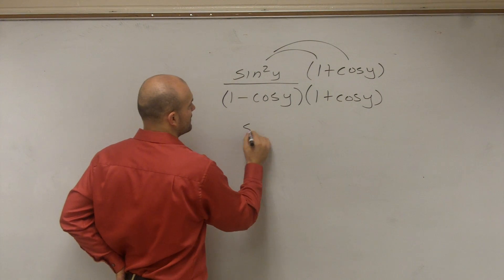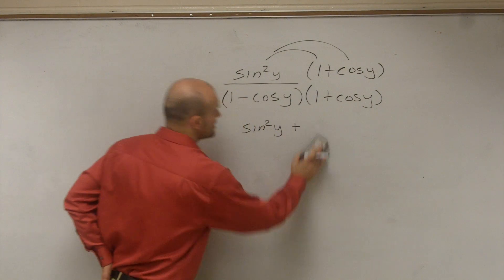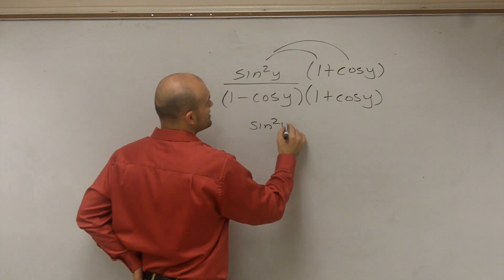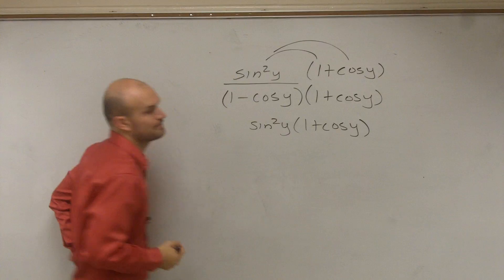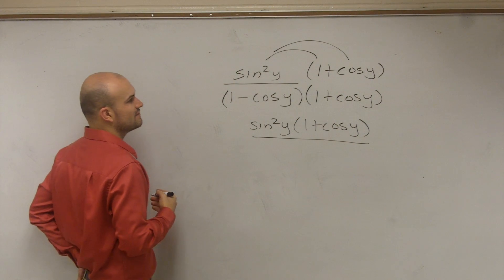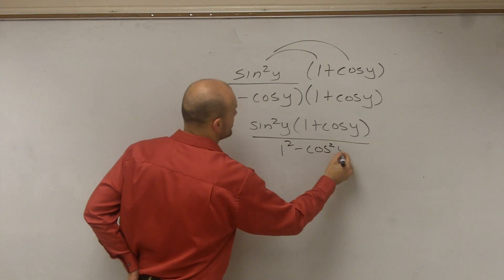So therefore, I have sine squared of y. Actually, I'm just going to leave that, I'm not going to distribute. I'm just going to leave that out, sine squared of y times 1 plus cosine of y. Then, we apply the difference of two squares, we're going to have 1 squared minus cosine squared of y. Well, 1 squared is just 1.